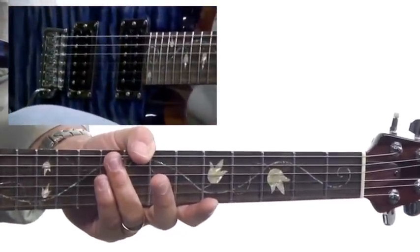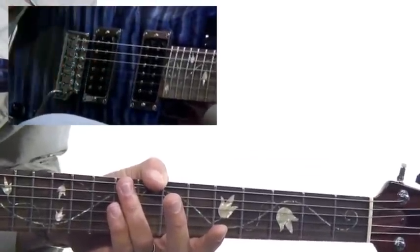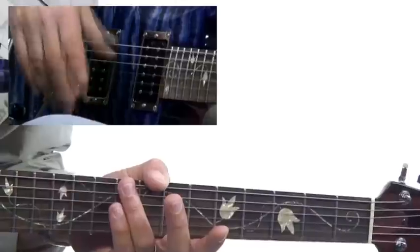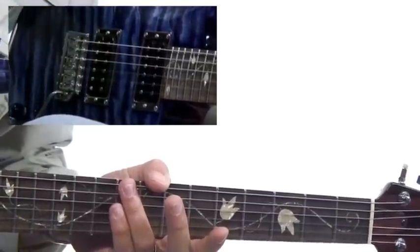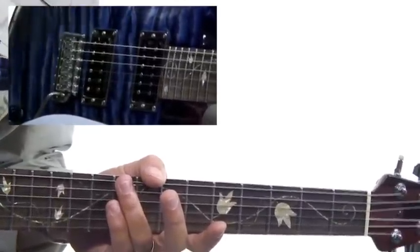Just a Latin groove. So you've got a measure of the two chord. Here we go. There's your G minor.